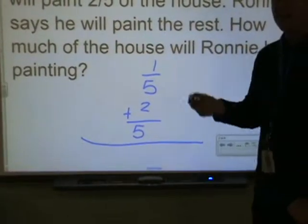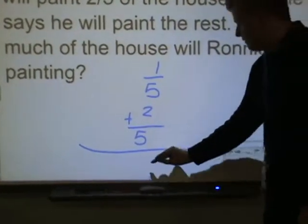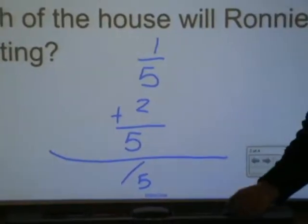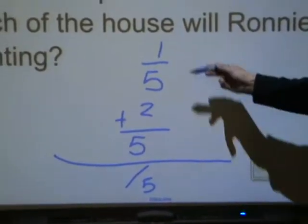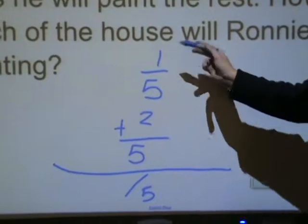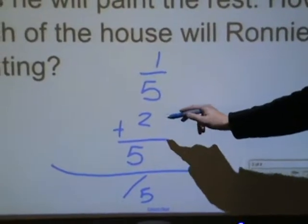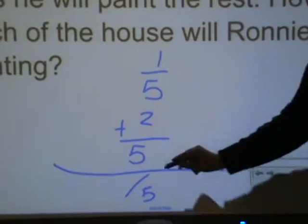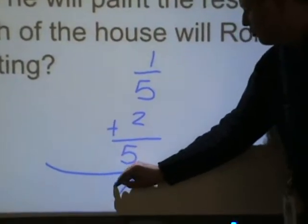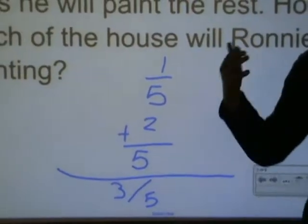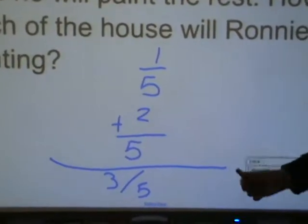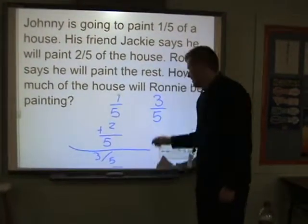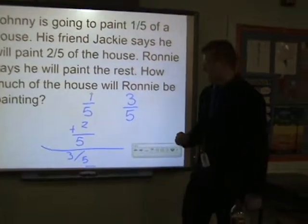You notice that they both have the same denominator, so the denominator stays the same — something-fifths. If Johnny's painting one-fifth and we add the two-fifths that Jackie's going to paint, I end up with one plus two, which is three-fifths. So between the two of them, they're going to paint three-fifths of the house.